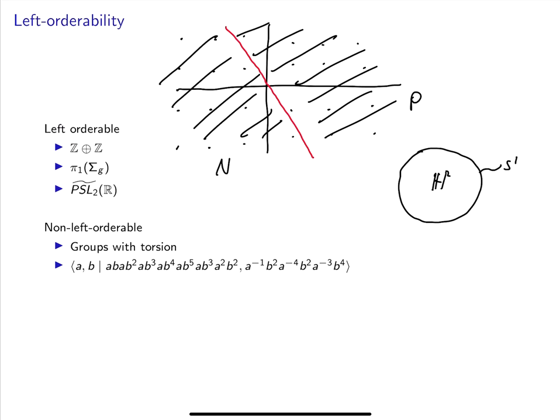Let's look at some examples of groups that are not left orderable. First of all, any group with torsion is not left orderable. For example, let's say that G is a group with torsion, and say a cubed is the identity. Without loss of generality, let's say that a is in the positive cone. Well, that implies that a squared would have to be in the positive cone, and that implies that a cubed wouldn't be in the positive cone, which means that the identity is in the positive cone, which violates the condition of being left orderable.